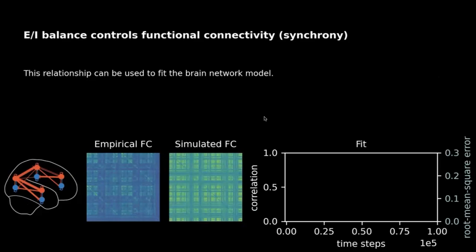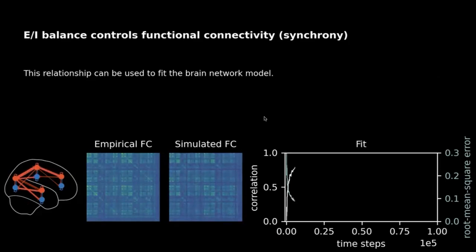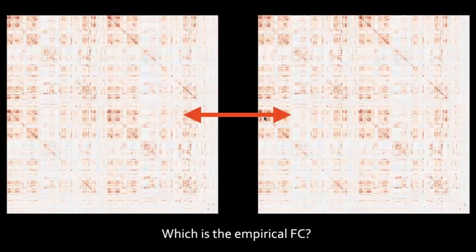We can do this for any pair of brain areas simultaneously. Using this method, it is possible to tune the simulated functional connectivity with a perfect fit to the empirical functional connectivity — the simulated and empirical functional connectivity cannot be differentiated anymore, yielding a correlation of 0.99. Excitation-inhibition balance could be an explanation for functional connectivity — it seems to be the excitation-inhibition structure of a network that gives rise to the state of synchrony.